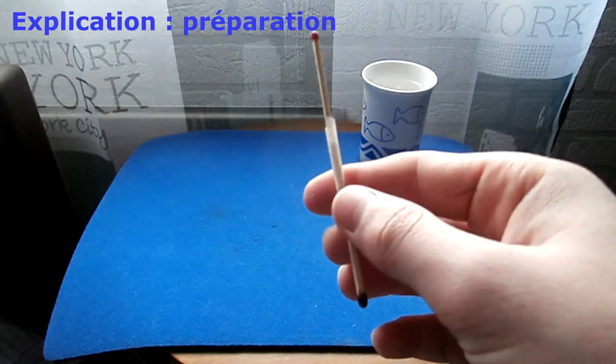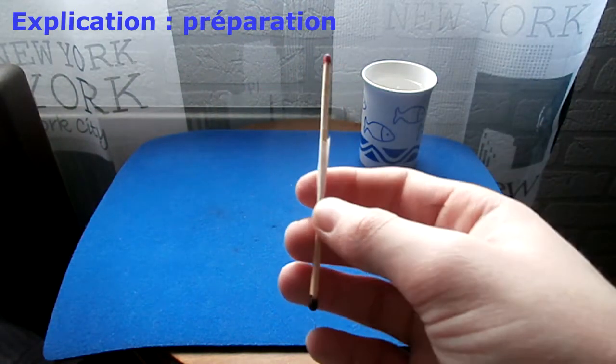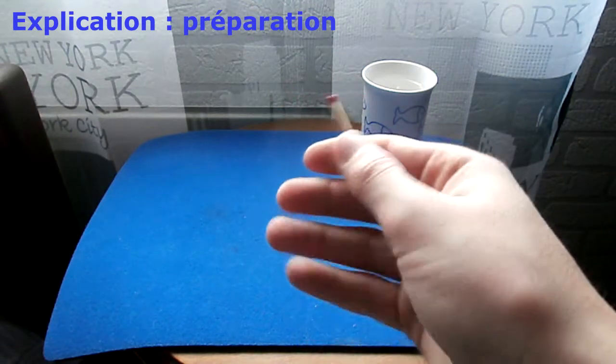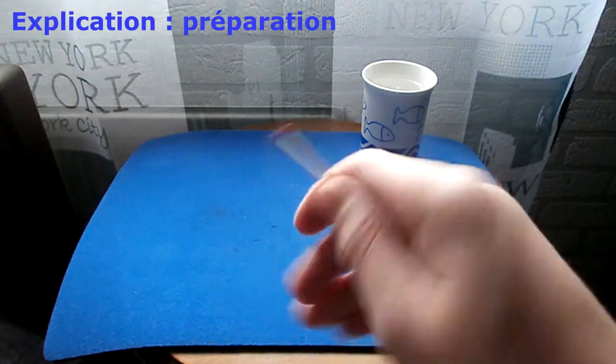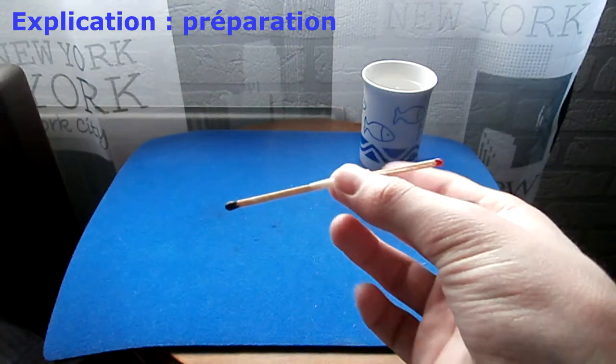Voilà, donc, pour la préparation, ça va être très très simple. En fait, vous allez devoir déjà montrer votre allumette, donc comme ceci. Bien évidemment, en cachant avec vos doigts l'autre allumette.